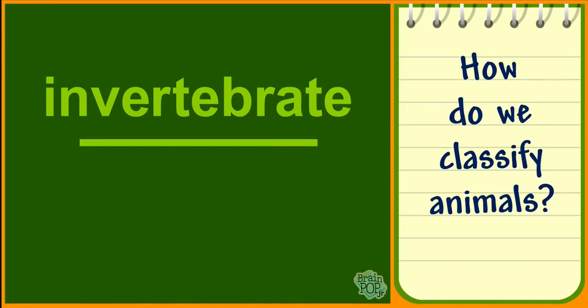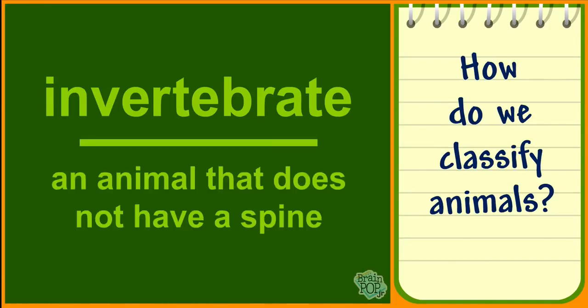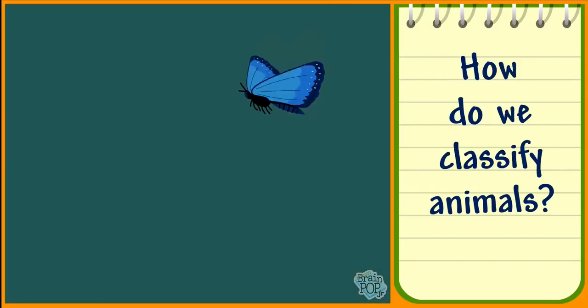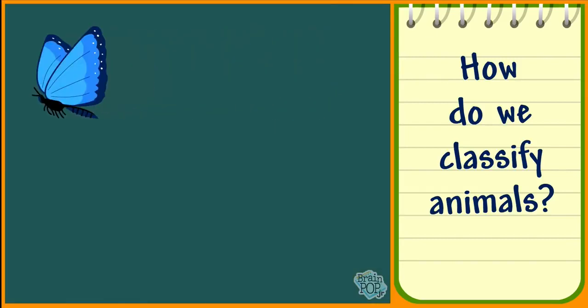An invertebrate is an animal that does not have a spine. Insects like butterflies and grasshoppers are invertebrates.